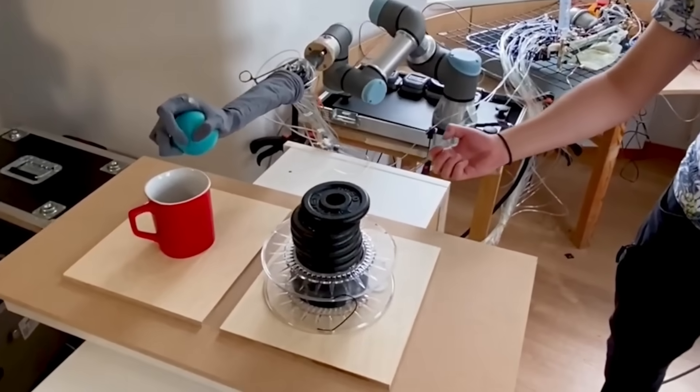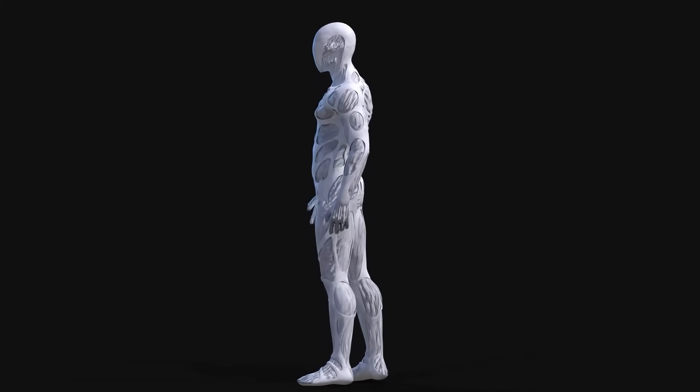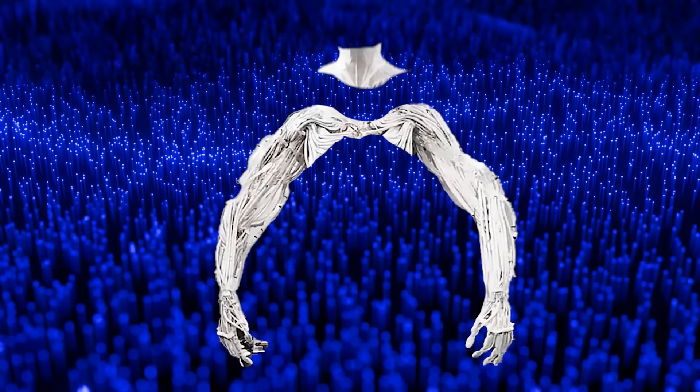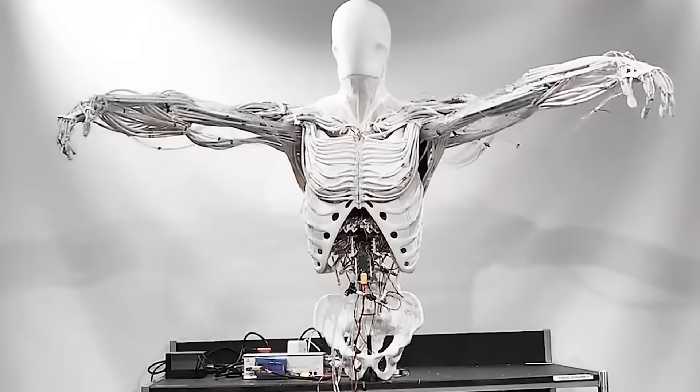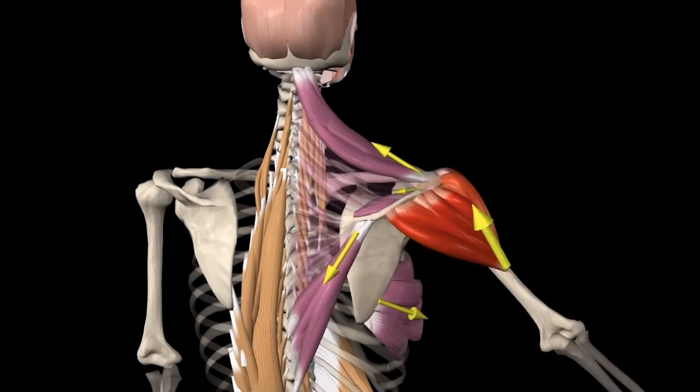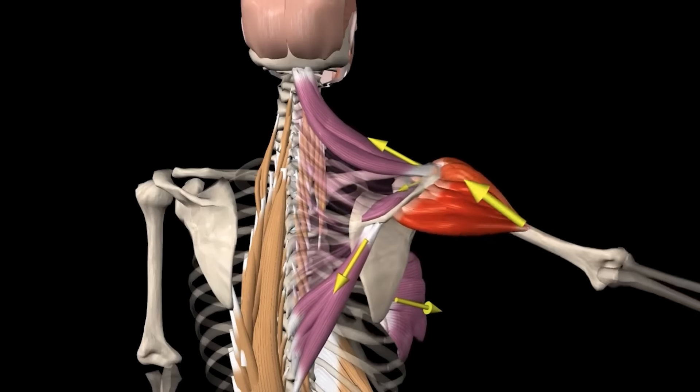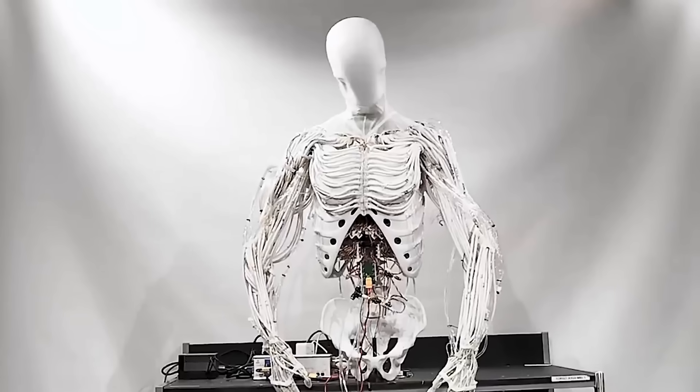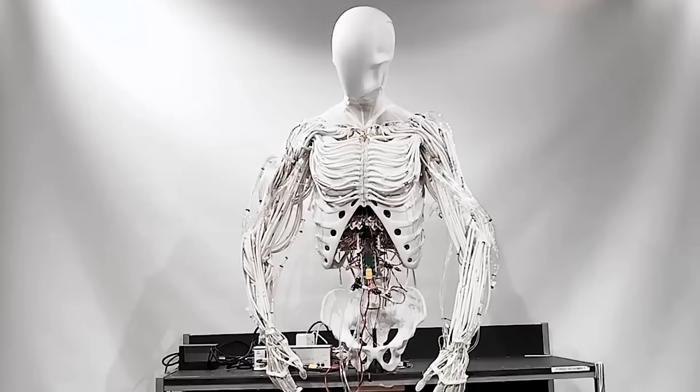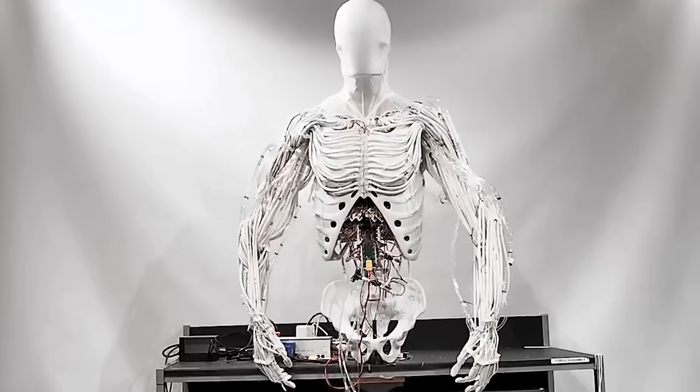The startup company shared a video on its official YouTube page of a biomimetic android robot with the human's shoulders, neck, and torso. With detailed human anatomical structures like the glenohumeral, scapulothoracic, acromioclavicular, and sternoclavicular joints in place, the stark white robot recreated eerily similar human-like movements with artificial muscles.